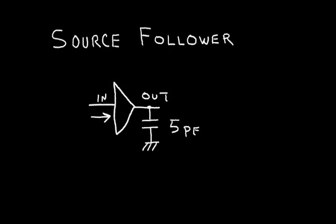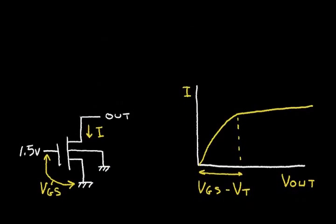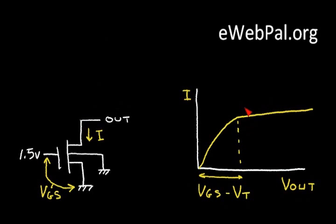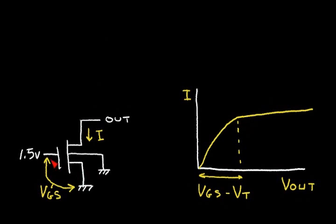Recall from a previous video on the CMOS current source that we had an n-channel transistor with the gate connected at 1.5 volts, and here we have the output of the current source with the current I. Over to the right we have a graph of the current in the current source versus the voltage at the current source output, V-out. We got this curve and at a certain point it became more or less a constant current source with some slope, and recall that this key voltage here...